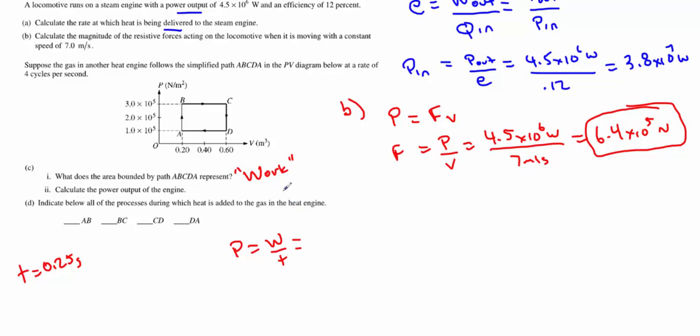Your work is going to be the area within this rectangle. So one leg times the other leg. We're going to do 0.4 times 2 by 10 to the 5. Let's go ahead and write that out: 0.4 cubic meters times 2 by 10 to the 5 newtons per square meter, or pascals is fine. We're going to divide that whole thing by 0.25 seconds. We're going to get a total power of 3.2 by 10 to the 5 watts. And that is the power output of this heat engine during this cycle.